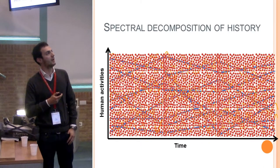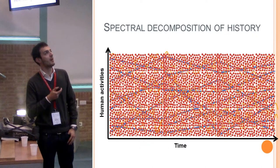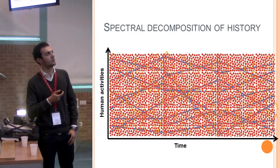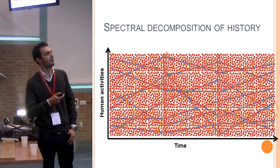The historian Fernand Braudel suggested a division of history into three periods of different duration — the so-called spectral decomposition of history. Those three periods are long duration, medium duration, and short duration. They can help us understand why historical modeling is actually feasible and can be done.